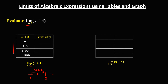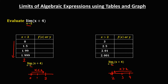For the right-side limit, to the right of positive 2, x is greater than positive 2. We pick numbers closer to positive 2: 3, 2.5, 2.01, and 2.001.